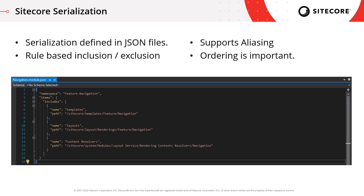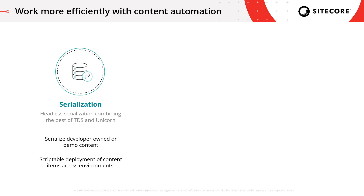You can use aliasing to give you control over the names of the folders generated on disk. This is used to help with the problematic Windows path limit. You should also know that items are deserialized in the order they are defined in the module JSON documents, so you need to make sure that you have your templates listed before any items that are based on them. You can think of this serialization as combining the best of both TDS and Unicorn, making it much easier for you to script your content changes and move them between your different environments as part of your development and deployment process.